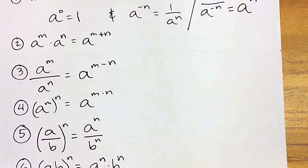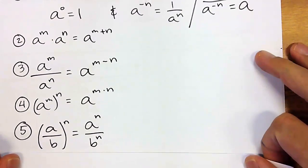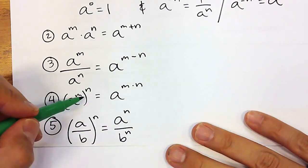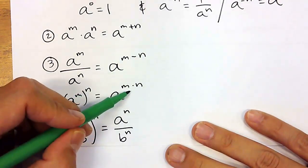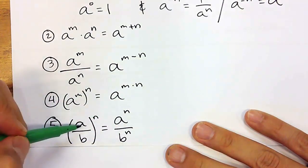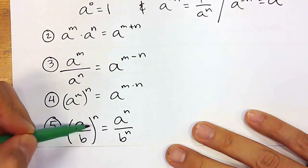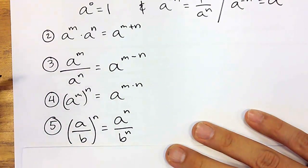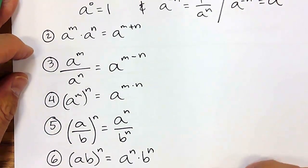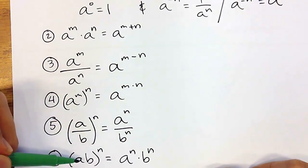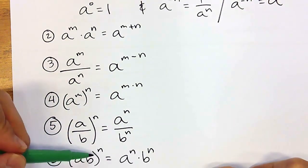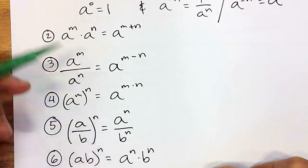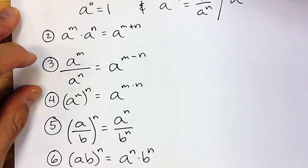If we have one base with multiple exponents, we're going to multiply the exponents. If it's division — a divided by b to the n power — that n power goes to both the a and the b. And similarly, a times b to the n power: the n is distributed to both the a and the b.